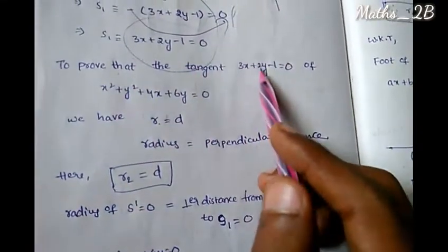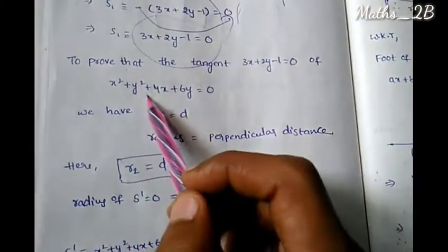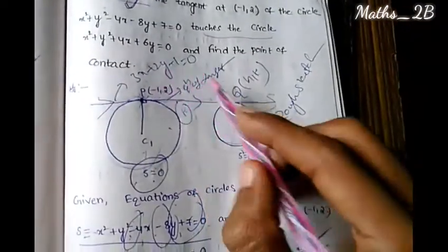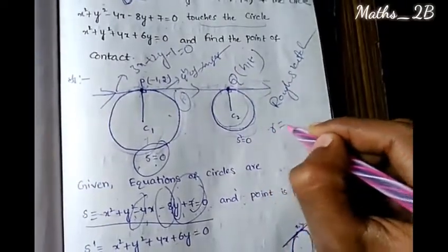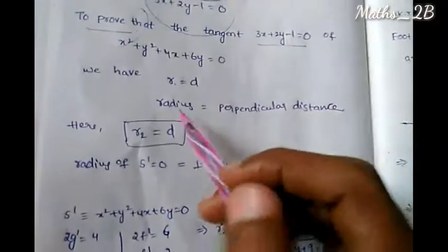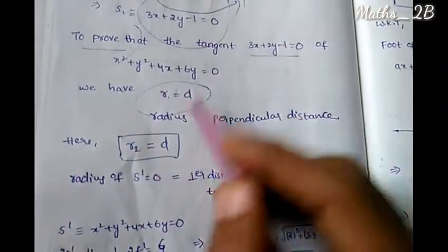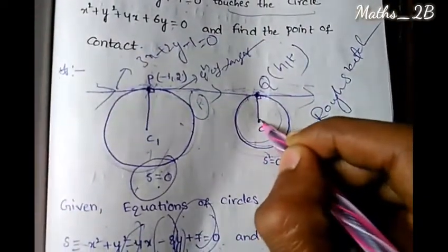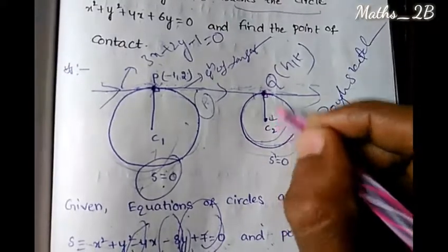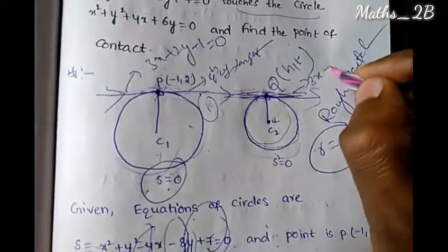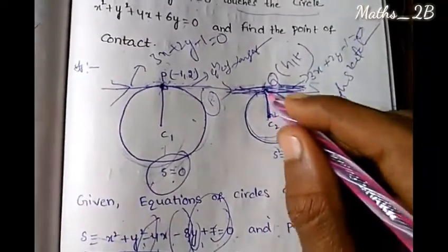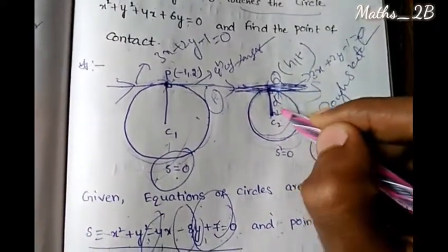To prove that the tangent 3x plus 2y minus 1 equals 0 touches the circle x squared plus y squared plus 4x plus 6y equals 0, we use the condition that the perpendicular distance from the center C2 to this tangent line equals the radius of the second circle.